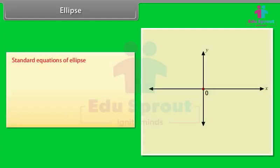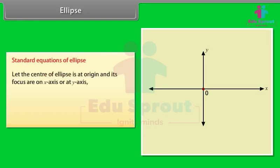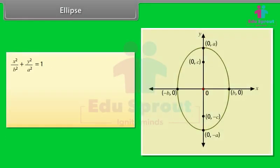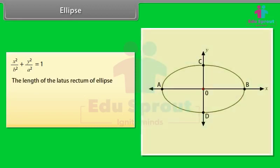Standard equations of ellipse: let the center be at the origin and its foci on the x-axis or y-axis. Two orientations are: x²/a² + y²/b² = 1 and x²/b² + y²/a² = 1. The length of the latus rectum of the ellipse x²/a² + y²/b² = 1 is 2b²/a.